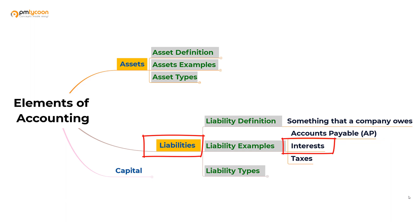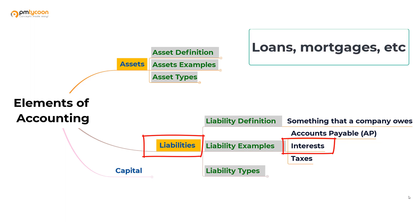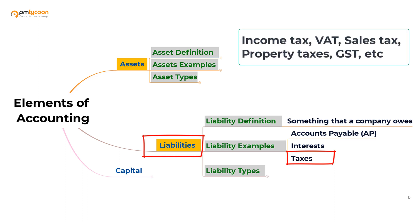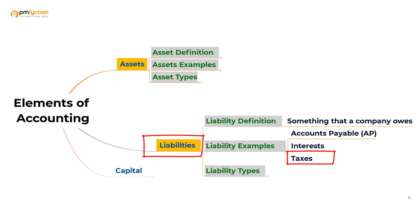Interest is another liability. We have to pay money for the loans we've taken, for the mortgages we have taken on properties, and so on. Since we are paying out money in the form of interest, interest is called a liability. We also have taxes — like income tax, value-added tax, sales tax, and property tax — which are also considered liabilities because we make payments in the form of tax.